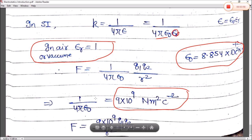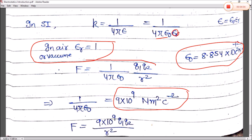So placing these values, F = (1 / 4πε₀) · q₁q₂ / r². This is the scalar form of Coulomb's law in electrostatics.